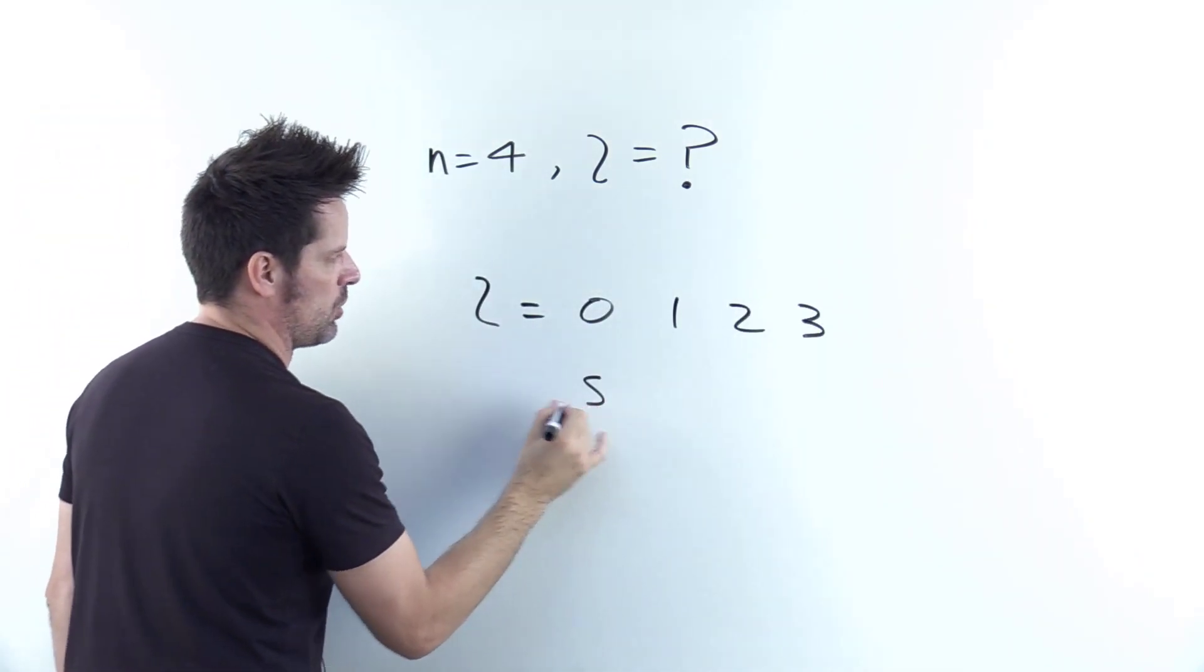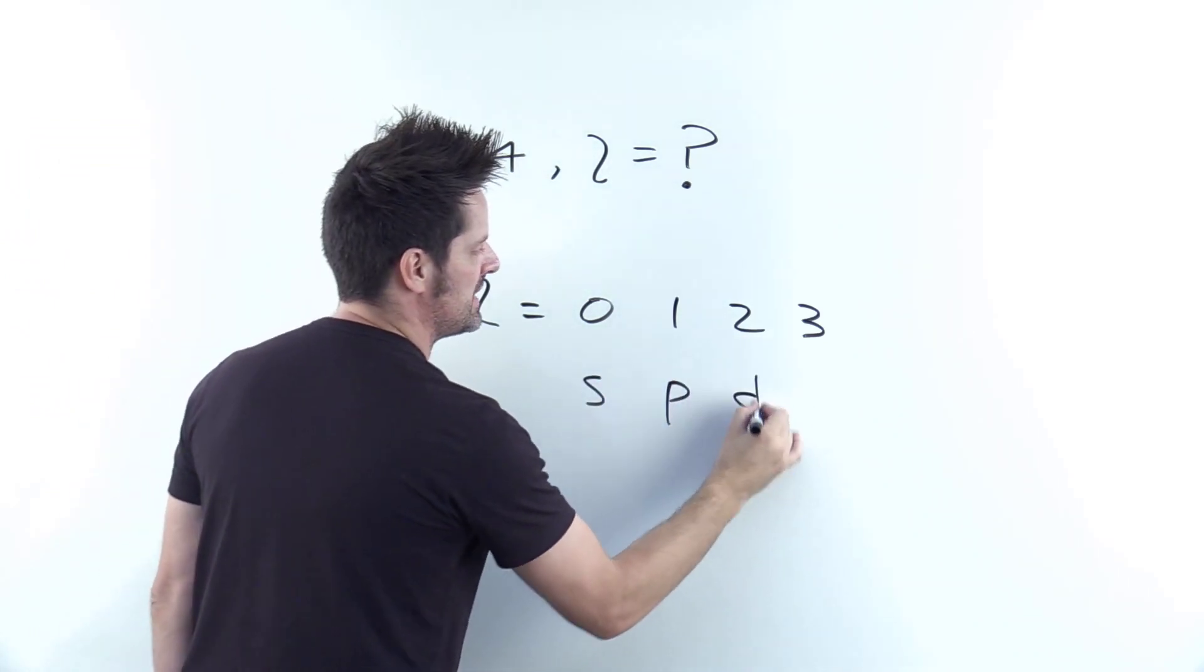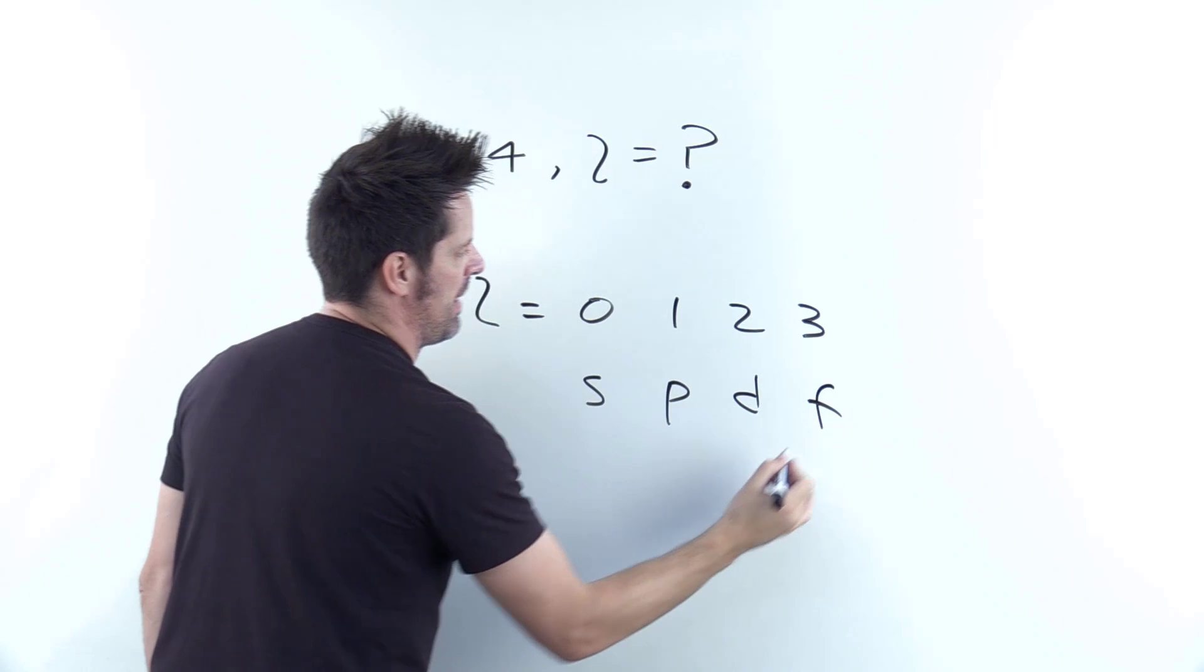If l equals 0, then you're talking about s orbitals. If it's 1, then you're talking about p orbitals. If it's 2, you're talking about d orbitals. And if it's 3, you're talking about f orbitals.